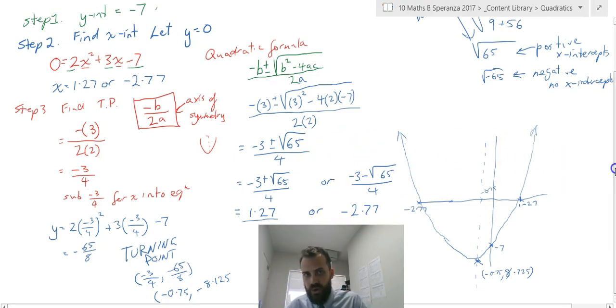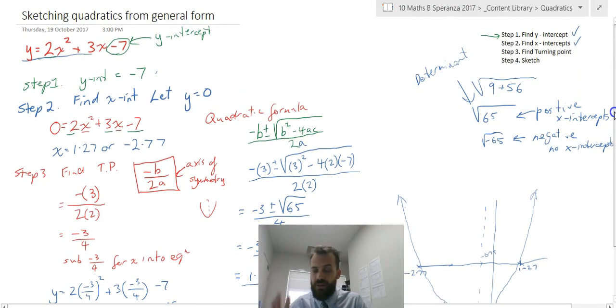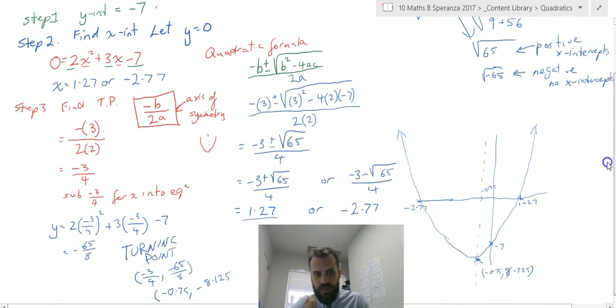A long process, but lots of important stuff in there. Find the y-intercept, it's the c value. Find the x-intercept by letting y equal 0, then using your quadratic formula to first figure out whether there's going to be any x-intercepts, and then to find them. Then find the turning point by using negative b on 2a, and then subbing that value back into the original equation to find the actual turning point, and then sketch it. Lots to do. Good luck.